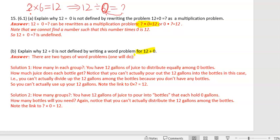So when we are asked to solve this division problem, 12 divided by zero equals what is equivalent to what times zero is equal to 12. Because of the commutative property, it can also be written as zero times what number is 12?